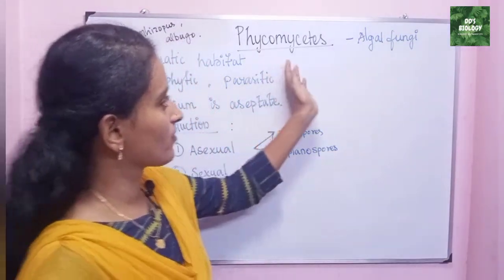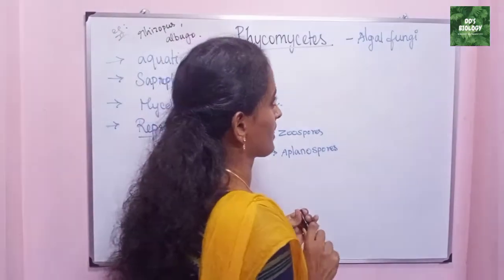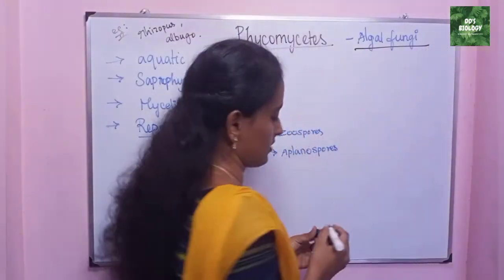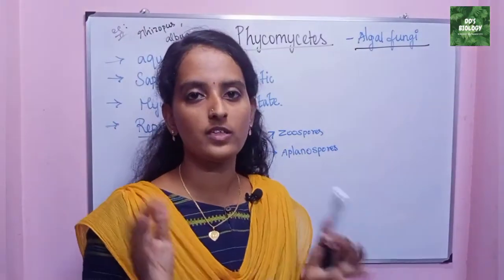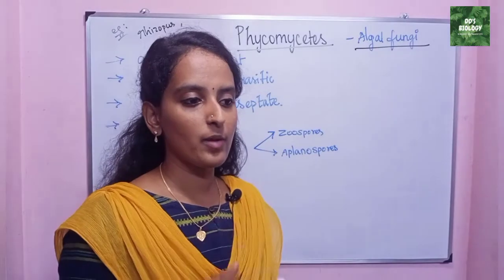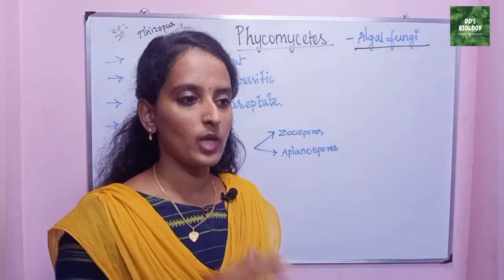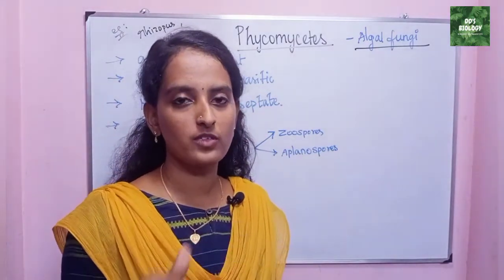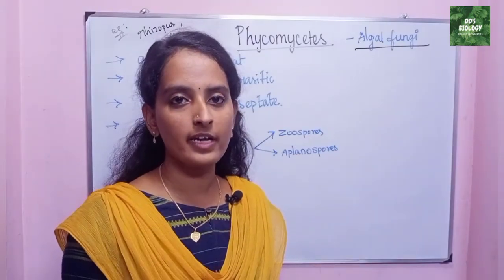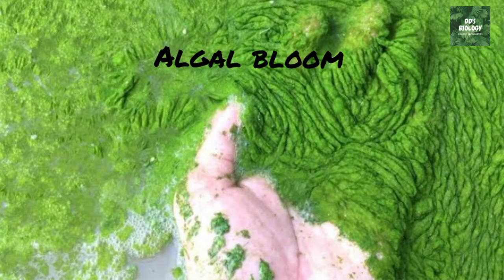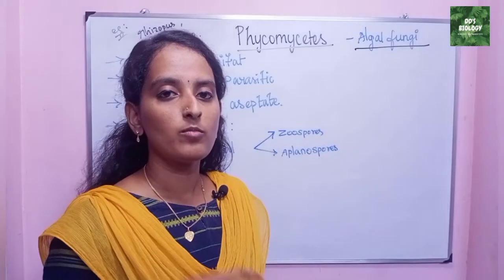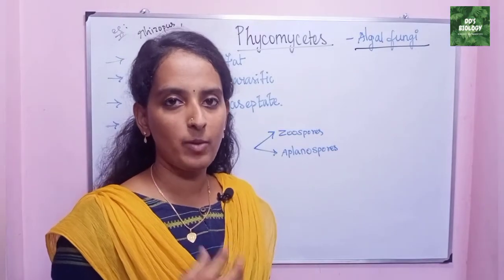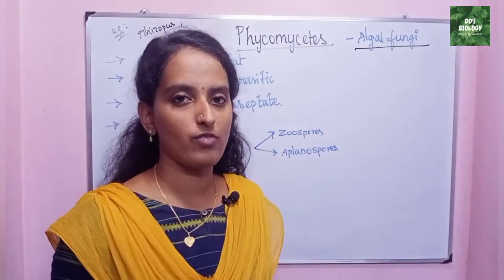What is Phycomycetes? It is algal fungi. In the nature of algae, it is aquatic and it shows rapid multiplication. In the surface of water bodies, you can see algae in green color — in lakes and ponds. The algae bloom — it is rapidly multiplying and it shows very high accumulation.